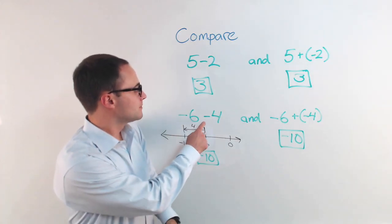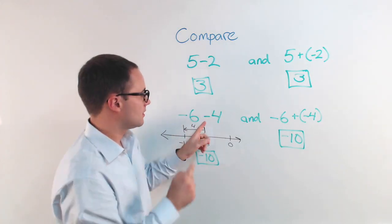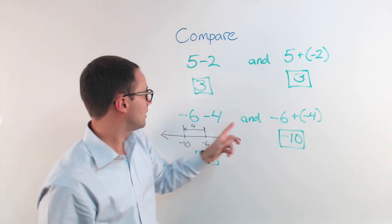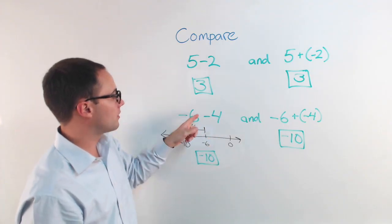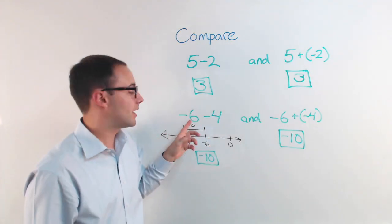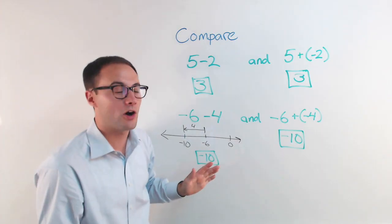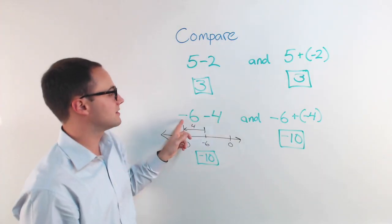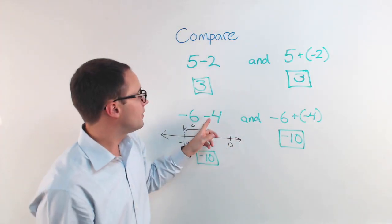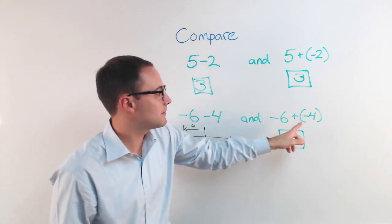Same thing here. This subtraction became addition. Notice, in both, the integer at the beginning didn't change at all. That 5 stayed the same, this negative 6 stays the same. This positive 4 became a negative.